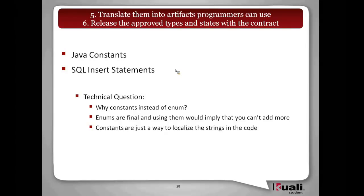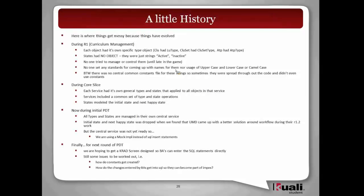We're shooting for extensibility — implementing institutions need to be able to extend and use these types and states. The constants are just a way to localize where the strings are in the code, so if we have to change that string because we did it wrong, we only have to change it in one place instead of going through tons and tons of code to change it.